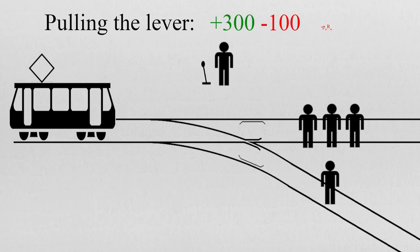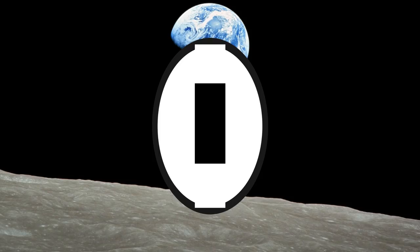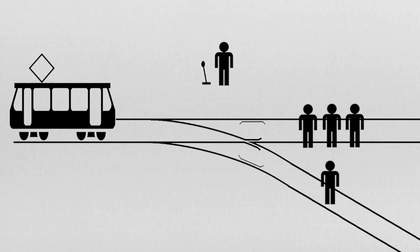Indeed, in some places we also have good Samaritan laws that offer legal protection to people who give reasonable assistance to those who are in peril. The protection is intended to reduce bystanders' hesitations to assist, for fear of being sued or prosecuted for unintentional injury or wrongful death.